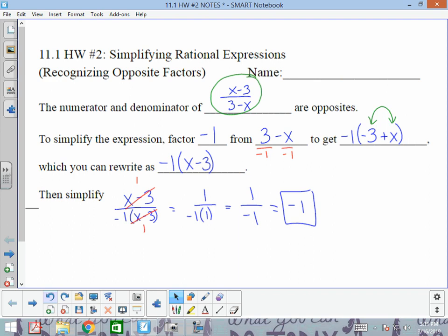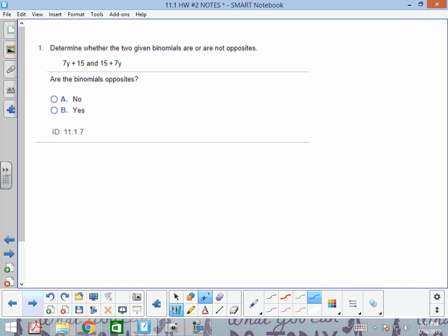Number 1, determine whether two given binomials are or are not opposites. Notice that 7y is positive, 7y is positive, 15 is positive, 15 is positive. These are not opposites. They both have to be different signs from each other.